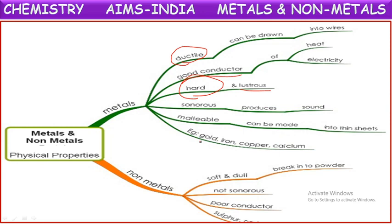Coming to nonmetals, all these properties will be quite opposite. They are non-ductile, soft and dull solids, and some are gases. They are non-sonorous - they won't produce any sound. They are poor conductors of heat and electricity and they are non-malleable. Examples for nonmetals: oxygen, hydrogen, nitrogen, sulphur, phosphorus, chlorine.